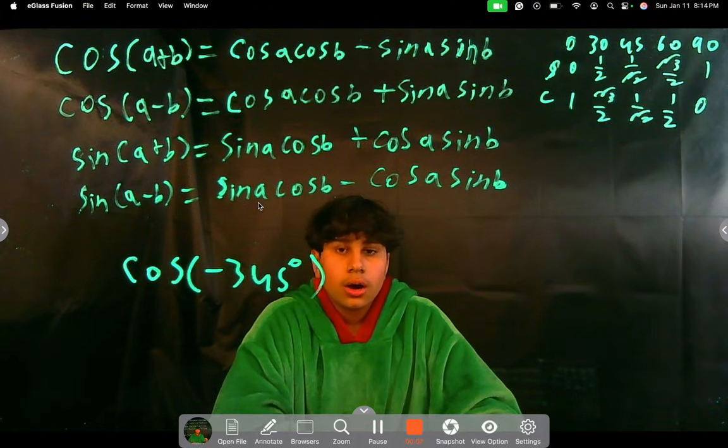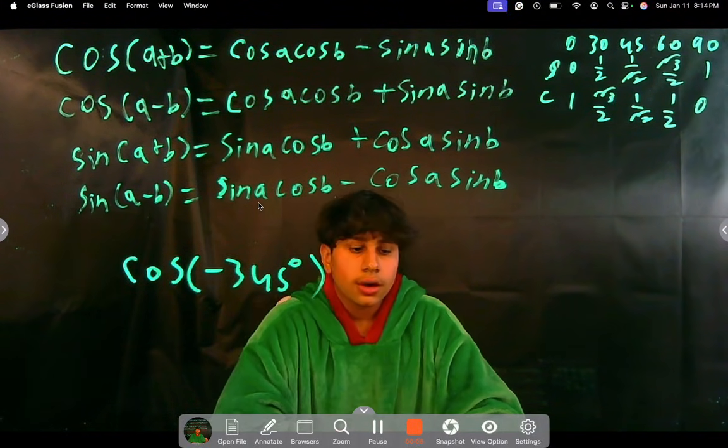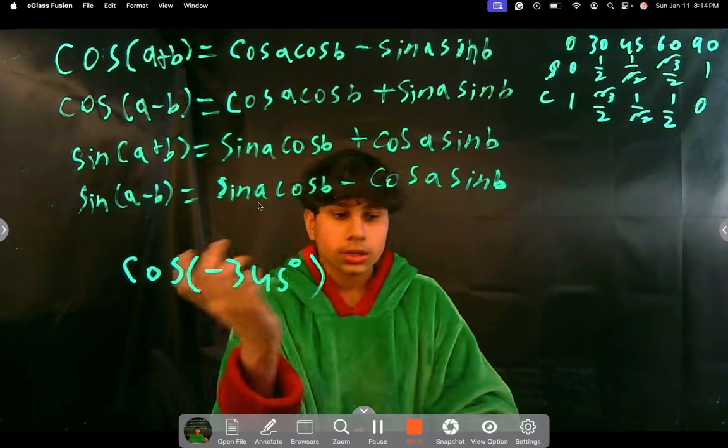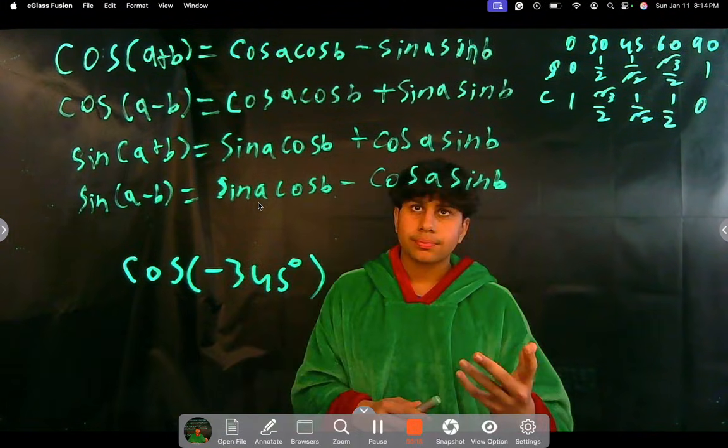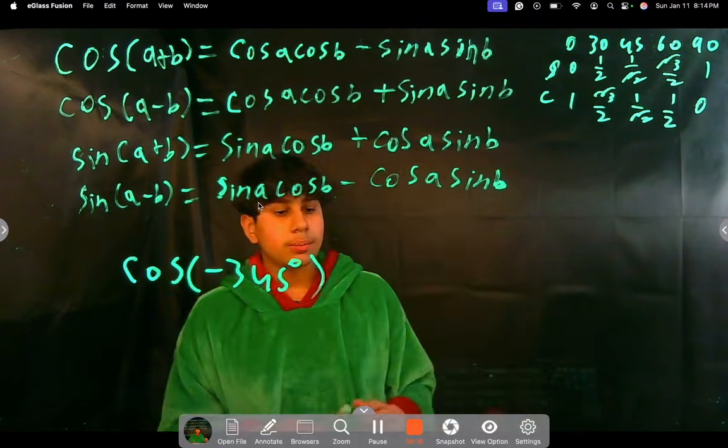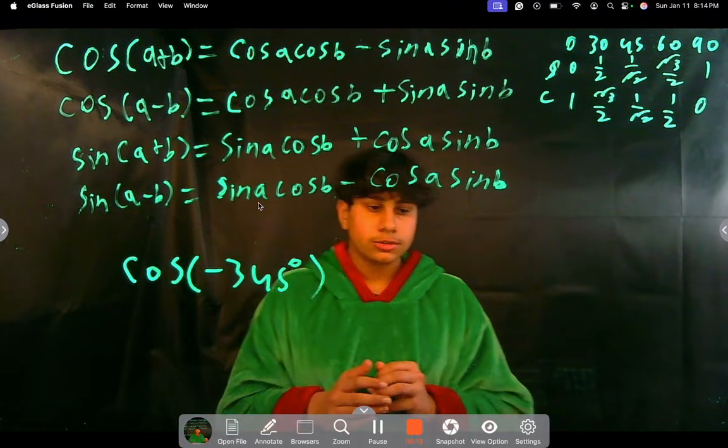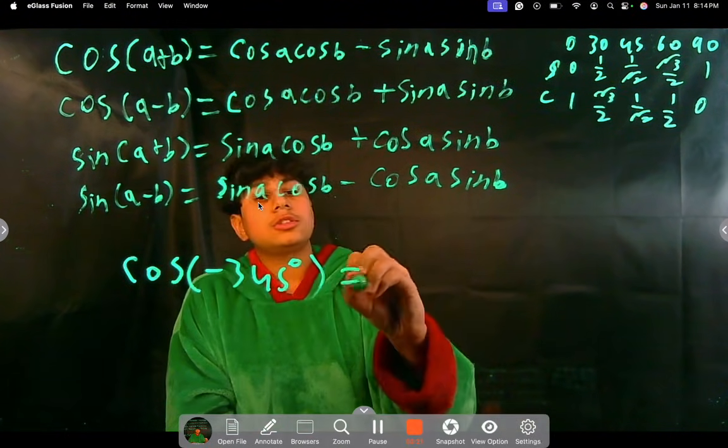We started learning about some difference trig identities, and now we're going to apply one more identity when simplifying. Actually, just one more, but there's also one more element that we're going to be using that we've learned before. So let's just dive right in.